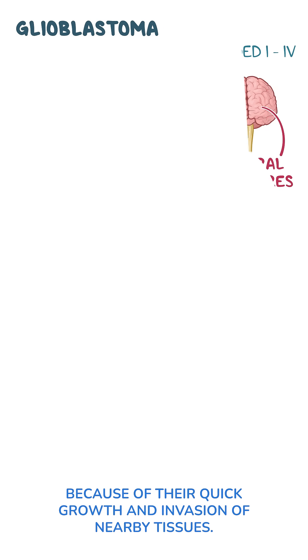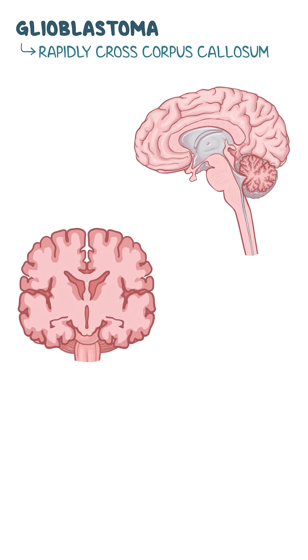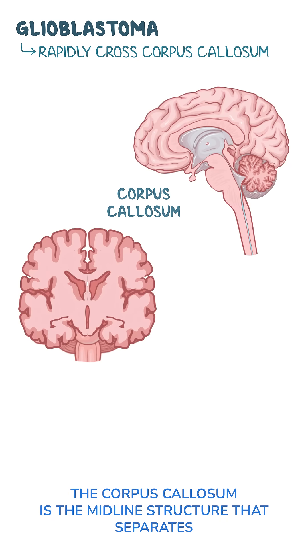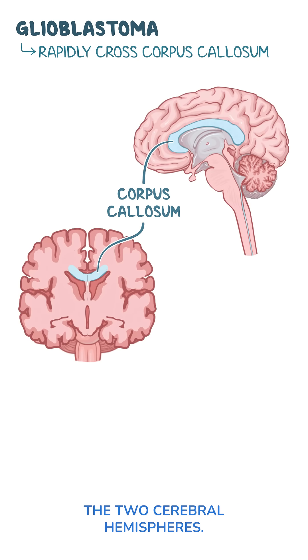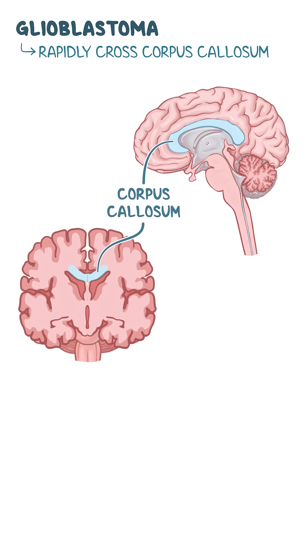Because of their quick growth and invasion of nearby tissues, glioblastomas tend to rapidly cross the corpus callosum. The corpus callosum is the midline structure that separates the two cerebral hemispheres. It looks like a characteristic butterfly on a cross section of the brain.